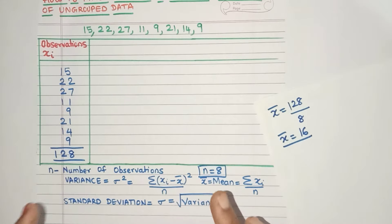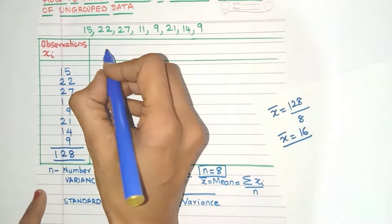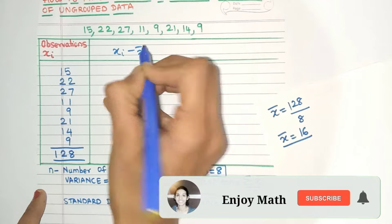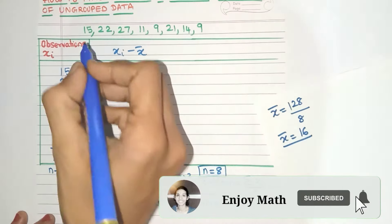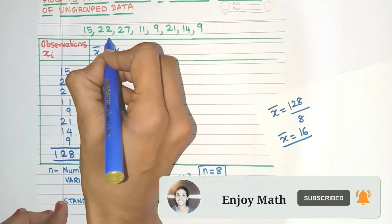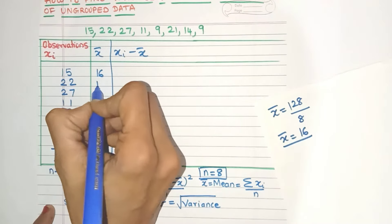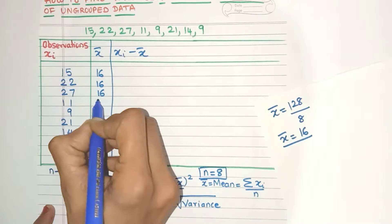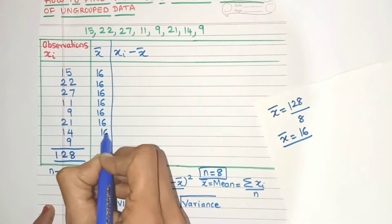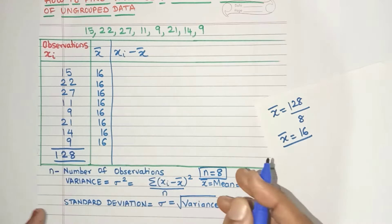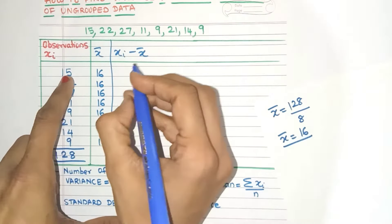Now again, let's see the formula. It will tell us what next to do. Now we need xi minus x̄. So the next column that we need is xi minus x̄. Now just for my convenience, I'm going to create another column called x̄ where I'll write the mean value which is 16. Now the reason I'm doing this is so that my subtraction is easier and I make less mistakes. But if you want, you can totally skip this column. So let's go ahead with the subtraction.